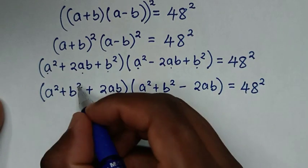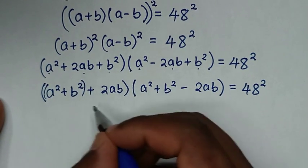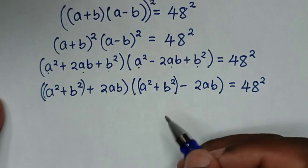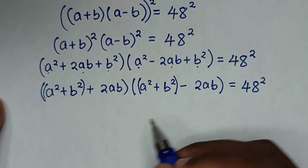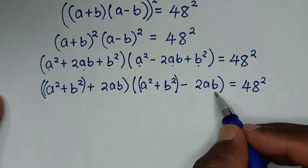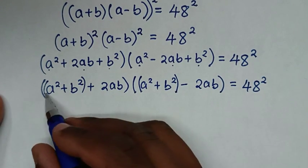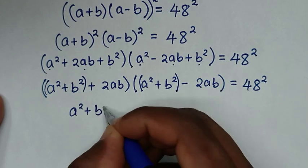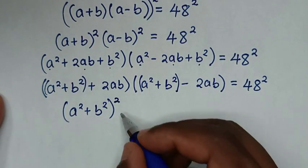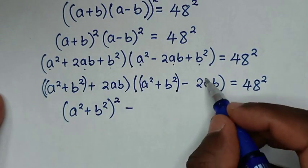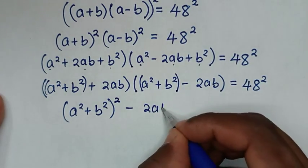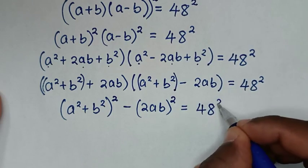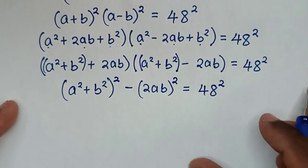Then in the next step, we group the terms: a squared plus b squared plus 2ab, times a squared plus b squared minus 2ab. Now this is also in the form of a perfect square difference, so it becomes a squared plus b squared, bracket squared, minus 2ab bracket squared, equals 48 squared.